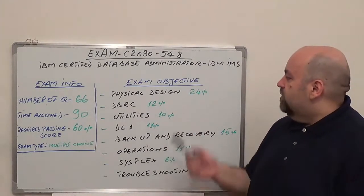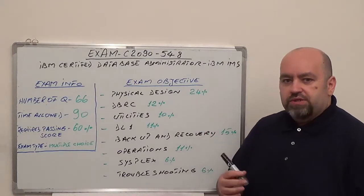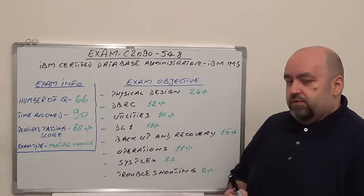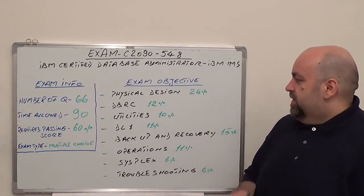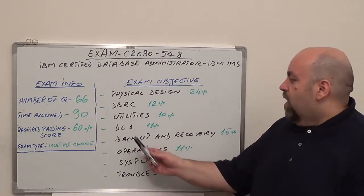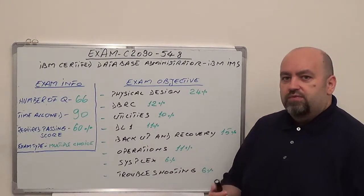First one is Physical Design with 24% from total of questions. Second one is DVRC with 12% from total of questions. Third one is Utilities, 10% from total of questions. After that we have DL1 with 11% from total of questions.